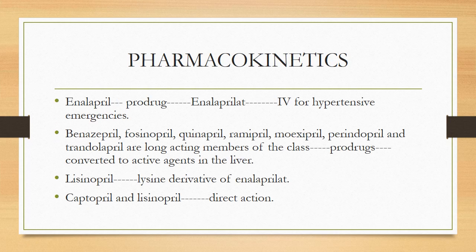Regarding pharmacokinetics: enalapril is basically a prodrug — it is converted into enalaprilat. Enalaprilat is also used for hypertensive emergencies. Benazepril, fosinopril, quinapril, ramipril, moexipril, perindopril, and trandolapril are long-acting members of this class. Most members are long-acting and given once daily. These are all prodrugs converted into active agents in the liver.